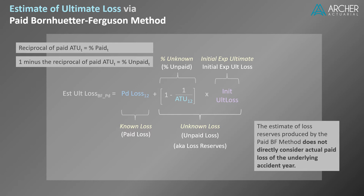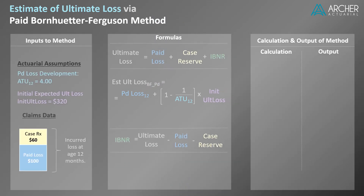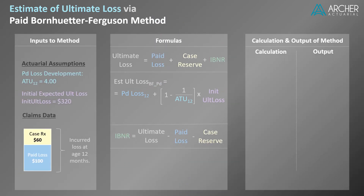Let's see how this formula works in action. We're going to substitute the values into our formula to calculate the estimate of ultimate loss. Ultimate loss equals paid loss of $100 plus 75% times $320. The 75% represents the expected percent unpaid at age 12, calculated using the age-to-ultimate factor of 4.0. Solving the formula, we get an estimate of ultimate loss of $340.